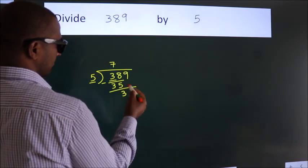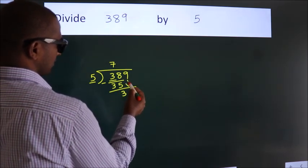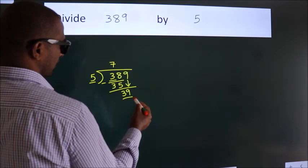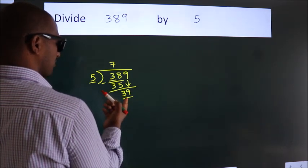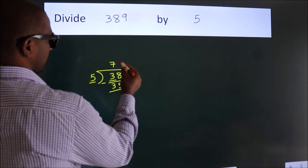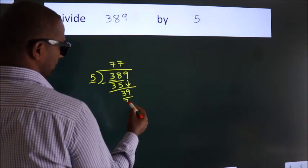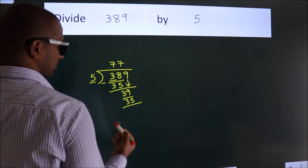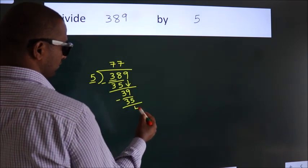After this, bring down the next number. So 9 down, giving us 39. A number close to 39 in the 5 table is 5 sevens, 35. Now we subtract. We get 4.